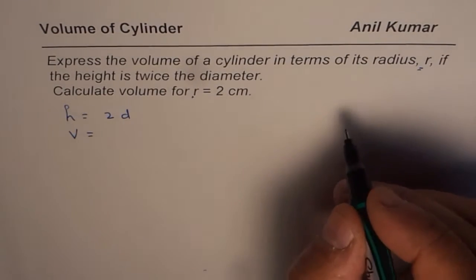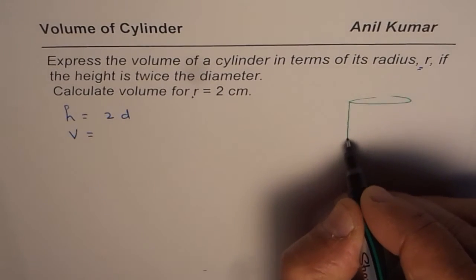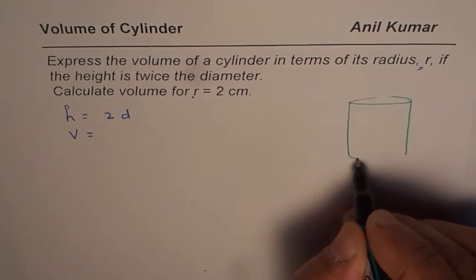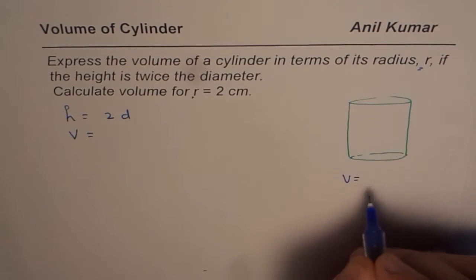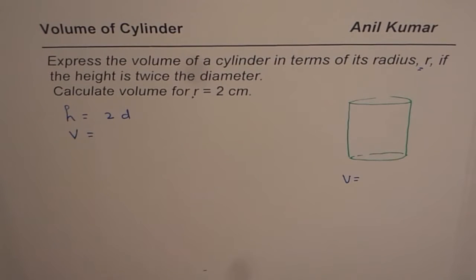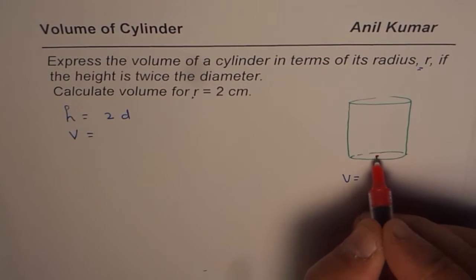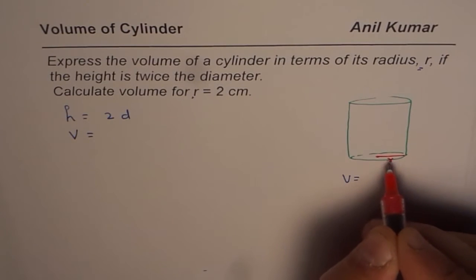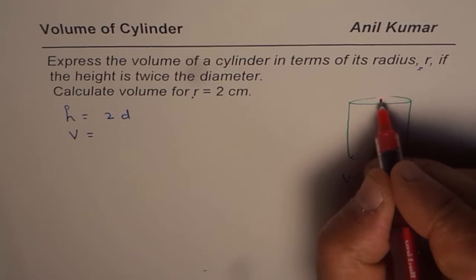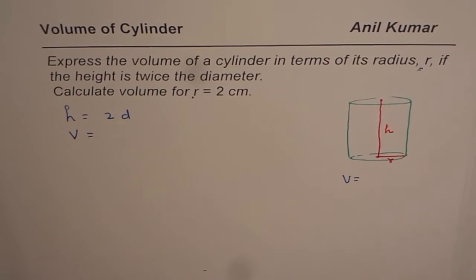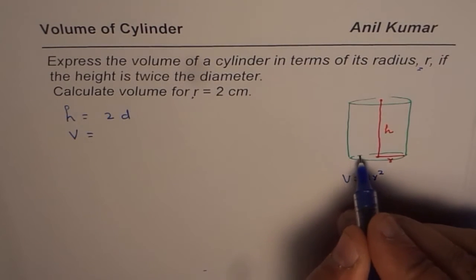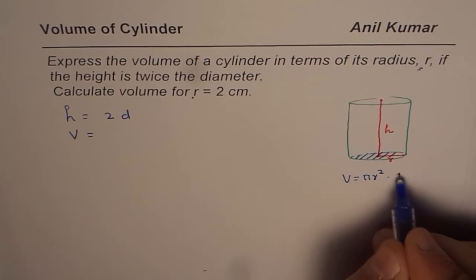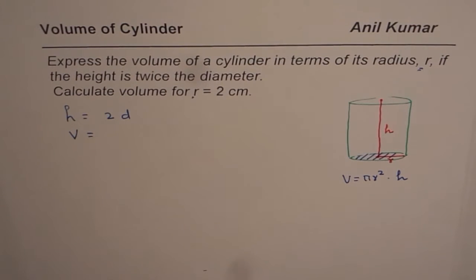So let us sketch one cylinder and use the given formula which all of you know as the volume of cylinder. What is volume of cylinder equal to? Volume of cylinder is equal to area of base which is pi r square, if r is my radius, times the height. So volume I could write as pi r square, that is the area of the base, times the height. So that is how we can write area times height as volume of a cylinder.